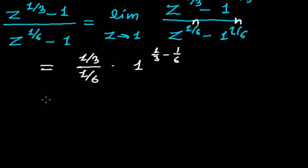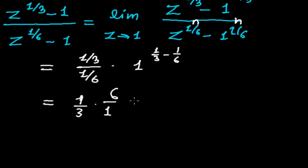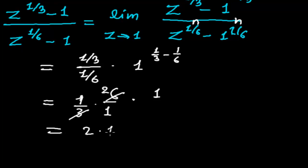So 1/3 divided by 1/6: the 6 comes to the top, giving us 6/3, which simplifies to 2. Then 1 to the power of anything is 1. So 2 times 1 equals 2. That's the value of this limit.